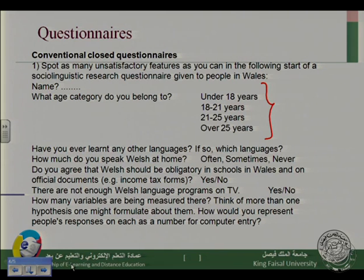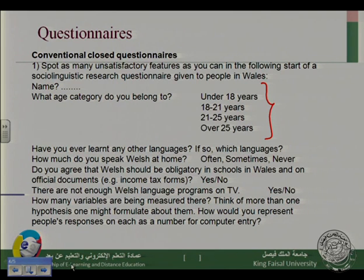The questionnaire starts with Name, and then the second question: 'What age category do you belong to?' — under 18 years, from 18 to 21, from 21 to 25, over 25 years. Then: 'Have you ever learned any other languages? If so, which languages?' Then: 'How much do you speak Welsh at home? Often / Sometimes / Never.' Then: 'Do you agree that Welsh should be obligatory in schools in Wales and on official documents, income tax forms? Yes / No.'